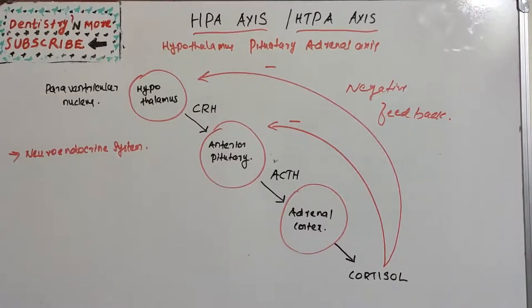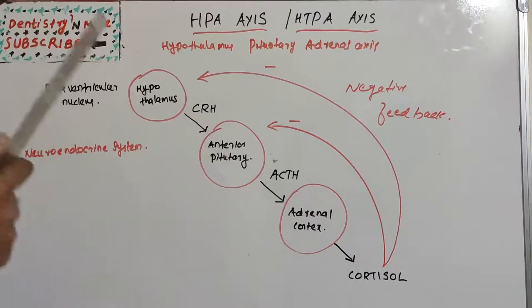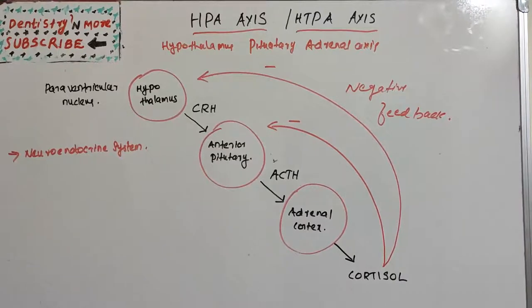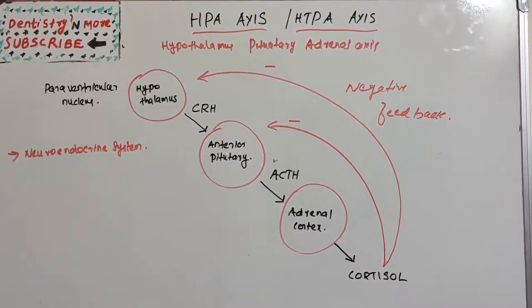Hello everyone, welcome back to another session on dentistry and physiology. Today we have a small topic: the HPA axis, or hypothalamic-pituitary-adrenal axis. It is a central nervous system arrangement which acts mainly on the stress response. When there is stress, this axis of hypothalamus, pituitary, and adrenal will be activated, and there will be production of hormones to face that peculiar stress situation.